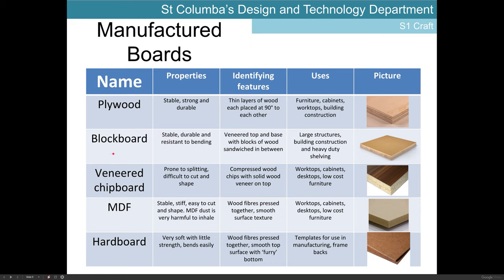Blockboard is a manufactured board we don't see very often but it does exist and has its uses. It's very strong, stable, and resistant to bending. It tends to have a veneered top and base — a veneer being just a thin layer of wood — with larger blocks in between, glued together with grains running in opposite directions to add strength. It tends to be used for heavier duty purposes such as building construction and heavy duty shelving.